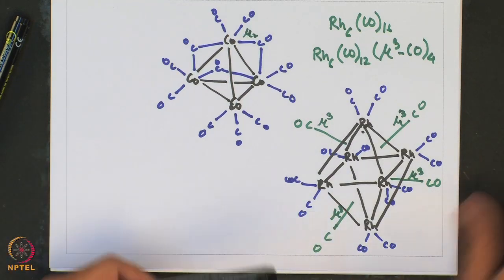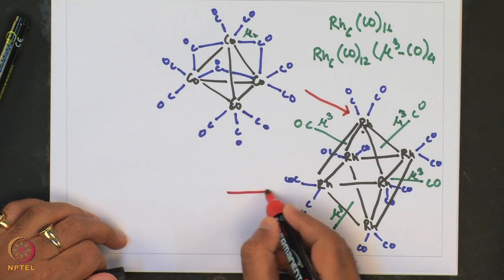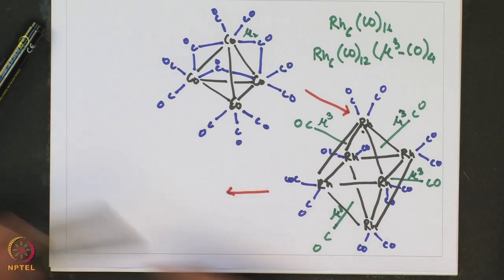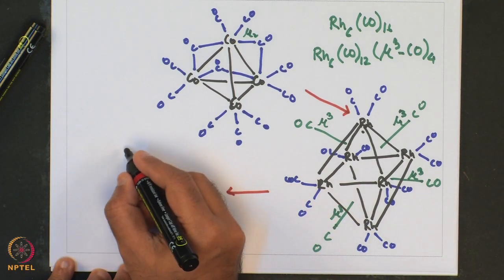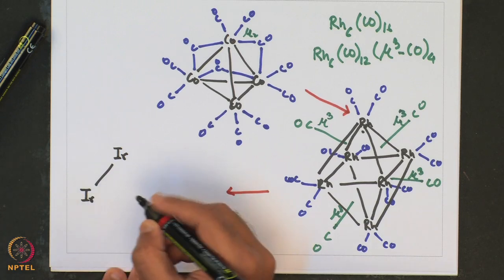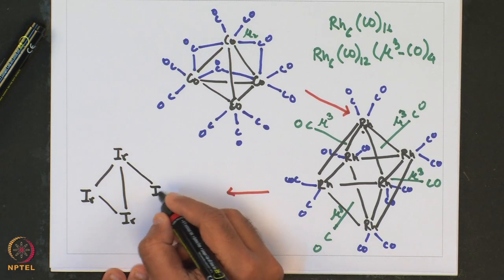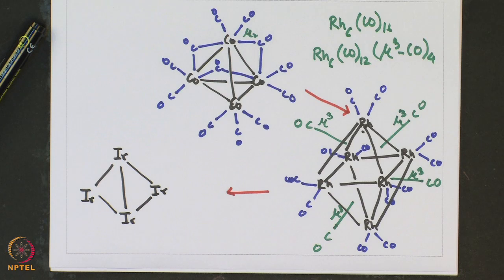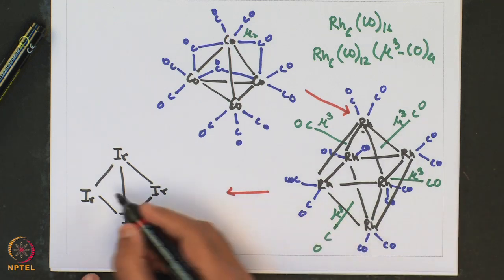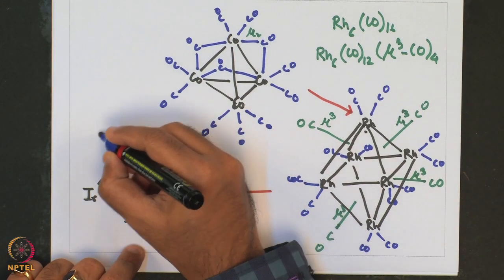When one goes from cobalt to rhodium, which is bigger in size, and then from rhodium to iridium, which is even bigger, we see that the formation of bridging carbonyl is completely inhibited. Here is an Iridium 4 cluster and there is no bridging carbonyl at all — each iridium is bound to three terminal carbonyl ligands as shown.